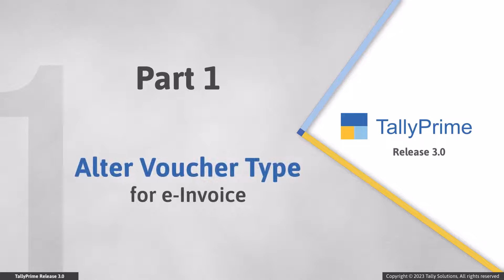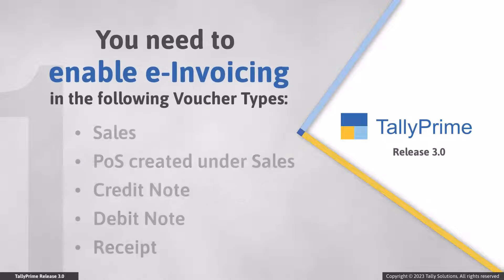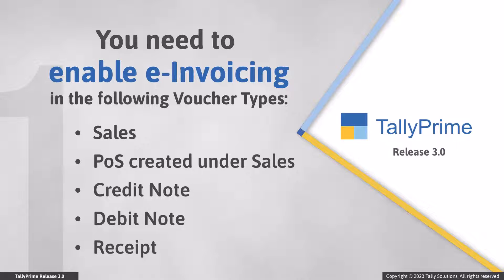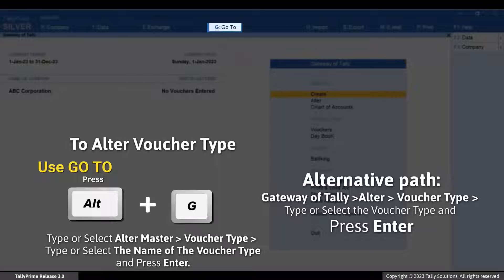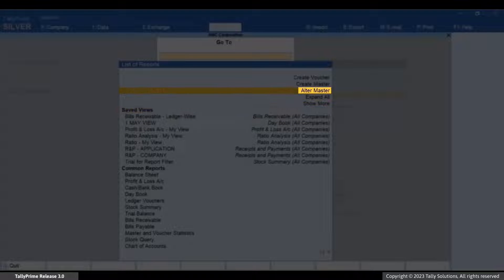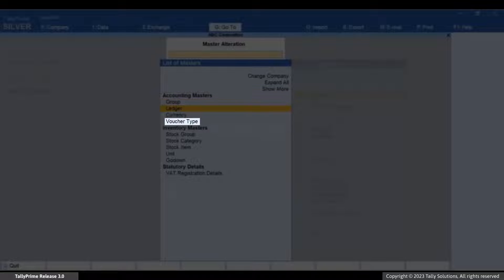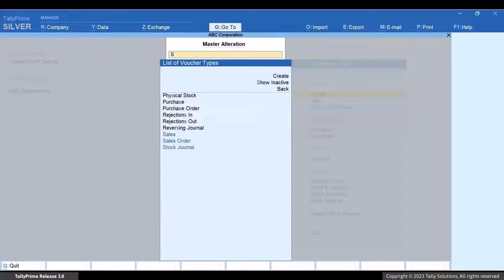Let us first see how to alter a voucher type for e-invoicing under e-invoice integration phase. You will need to enable e-invoicing in sales invoice, credit note, debit note, and receipt voucher types. Let's open sales voucher type. Press Alt plus G, go to Alter Master, Voucher Type, type or select Sales, and press Enter.